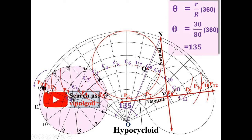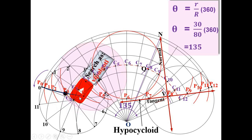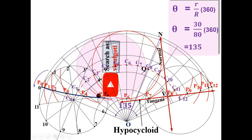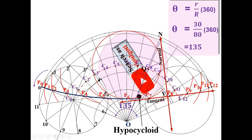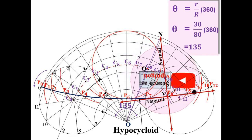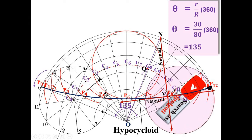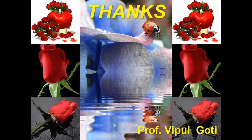Look at the rolling circle — the black point on the circumference is the focus point. Watch how the hypocycloid is generated as the rolling circle rolls. Understanding this concept will allow you to draw the hypocycloid easily in the examination. Thanks, dear friends.